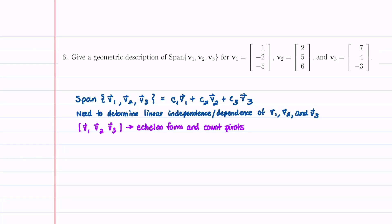Welcome to Understand the Math. For this question, we're asked to give a geometric description of the span of V1, V2, and V3, and then we're given vectors V1, V2, and V3. Let's go over a little bit of theory before we dive into the solution of this problem.